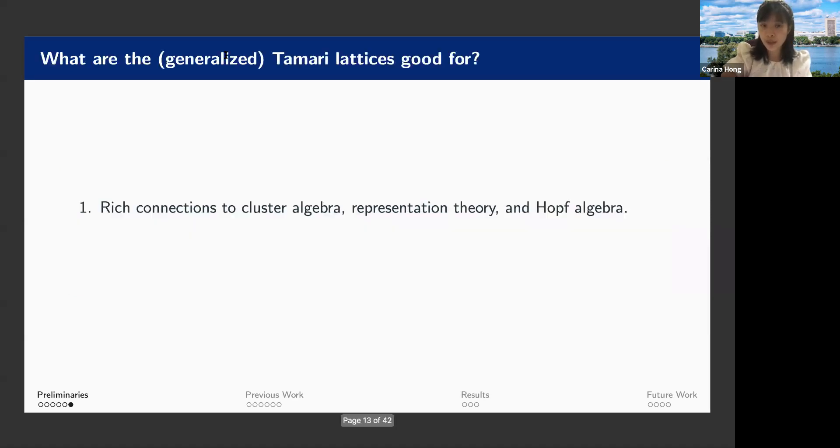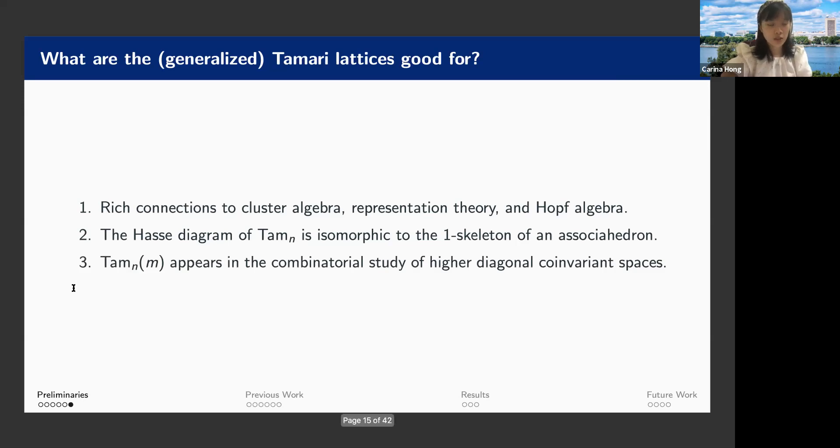So you might ask, why do we care about them? Well, because it has a lot of rich connections to cluster algebra, and Hopf algebra. For example, the Hasse diagram of Tan_N is isomorphic to the one skeleton of an associahedron. And also, Tan_NM, this more general M Tamari lattices, it was actually introduced in the combinatorial study of higher diagonal co-invariant spaces. And so this kind of Tamari lattices are of people's interest, and then we want to know what's pop's effect on it.